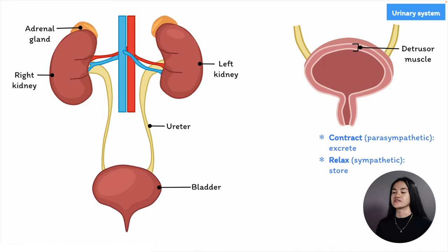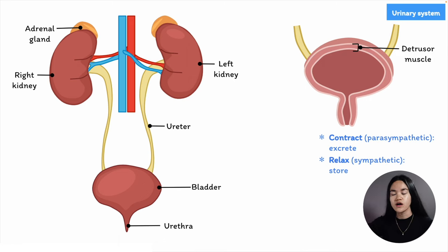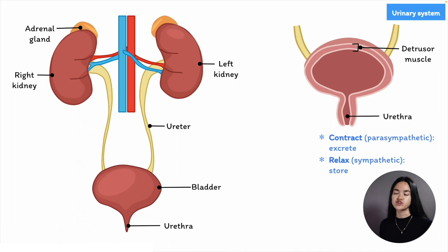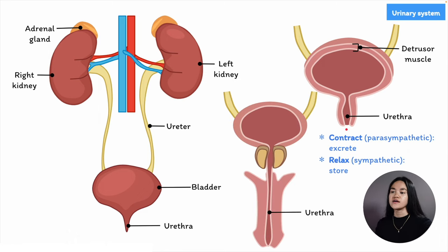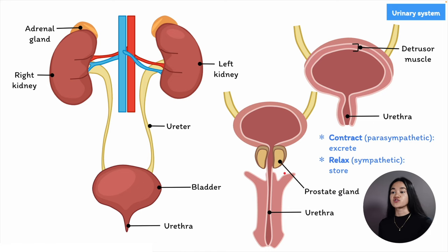The urine produced in the kidneys travels down the ureters, which carry urine to the urinary bladder, then eliminated via the urethra. The urethra transports urine from the bladder to the outside. In women, the urethra is relatively short — a short, straight tube from the neck of the bladder to the outside. In males, the urethra is longer and serves as a passageway for both urination and ejaculation. The prostate gland surrounds the urethra just below the neck of the bladder.